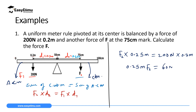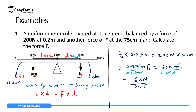Calculating the right-hand side: 200 times 0.3 gives 60 newton-meters. So 0.25 times F2 equals 60 newton-meters. Dividing both sides by 0.25 meters, the units cancel and we get F2 equals 60 divided by 0.25, which gives us F2 equals 240 newtons. We have applied the principle of moments — clockwise equals anticlockwise — to find F2.